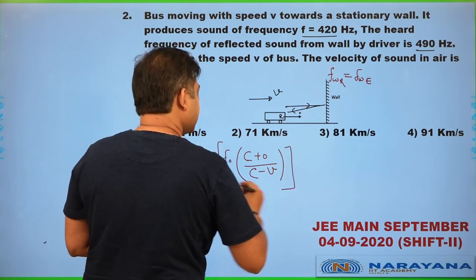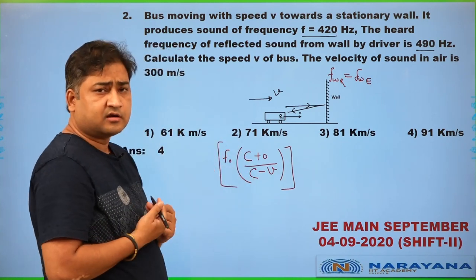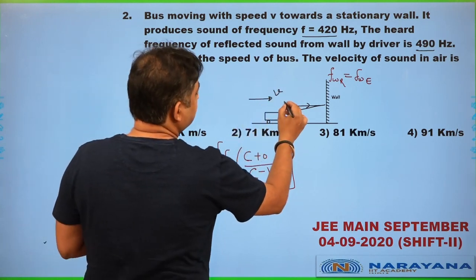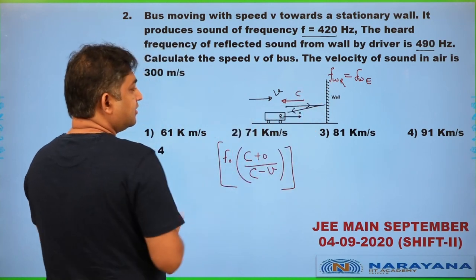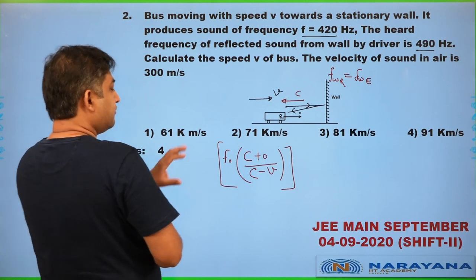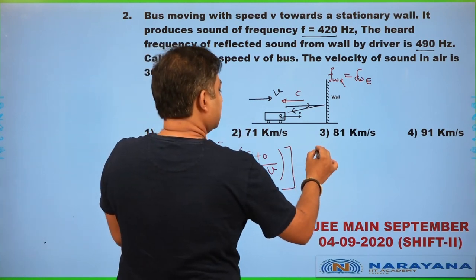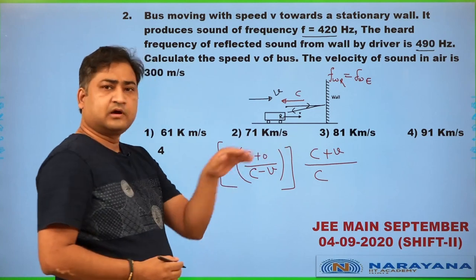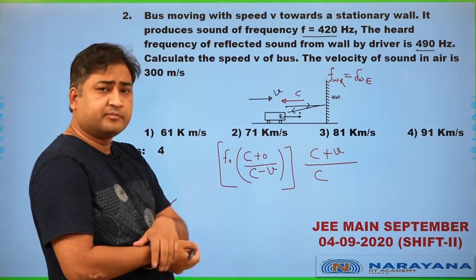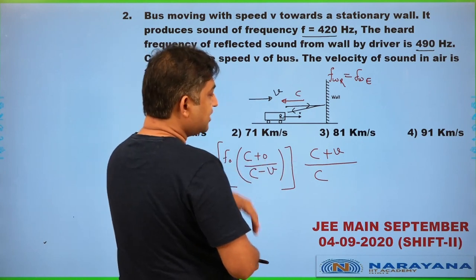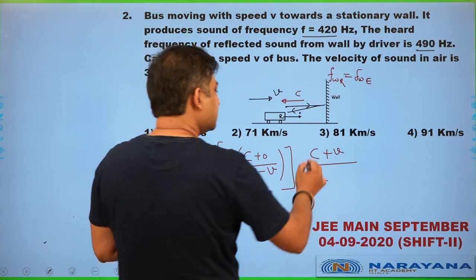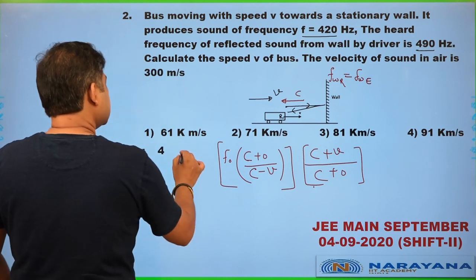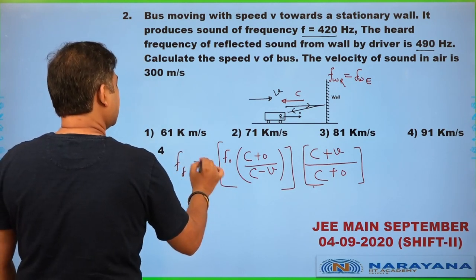The wall acts as a source, emitting sound waves backward. Now the waves are travelling in this direction with speed c, and the observer (driver) is moving through those waves. The frequency gets further modified. The driver is moving against the wave, so a correction comes in the numerator. The denominator is the effect of the source — the wall is stationary — so there is no correction in the denominator. The final frequency felt by the driver is the result of these two stages.